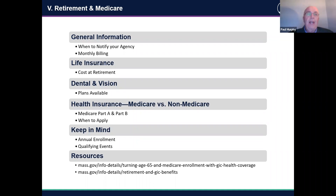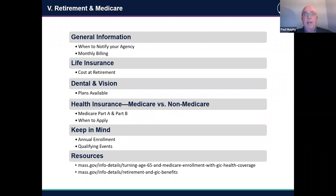Regarding health insurance — this is where it gets tricky for most members in how to coordinate with Social Security, Medicare, and what happens to benefits when they reach age 65. Retirees of the Commonwealth currently pay 20% of their monthly premium. If you were hired before 2003, your current health contributions are at 20%. If you were hired after July 1st, 2003, you currently pay 25%. When you retire, you pay 20%, so those hired after 2003 get a reduction from 25% down to 20% for their health insurance.